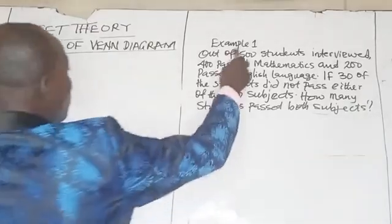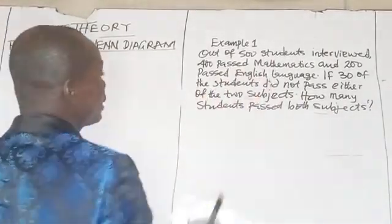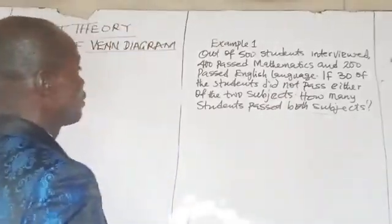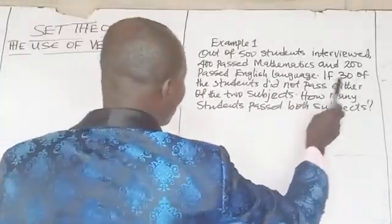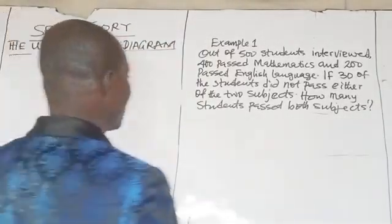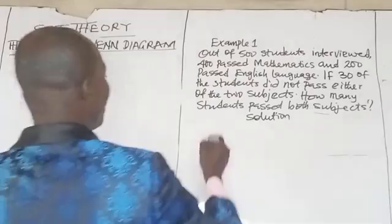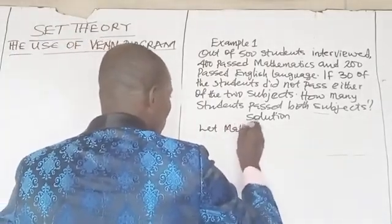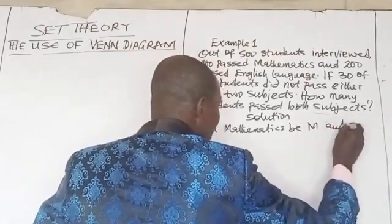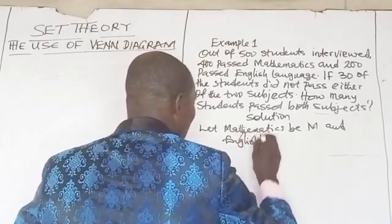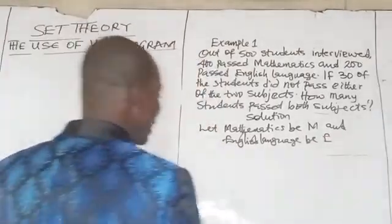I want to provide a worked example on this. Example one: out of 500 students interviewed, 400 passed mathematics and 200 passed English language. If 30 of the students did not pass either of the two subjects, how many students passed both subjects? Let mathematics be M and English language be E. So there are two subjects: mathematics and English.